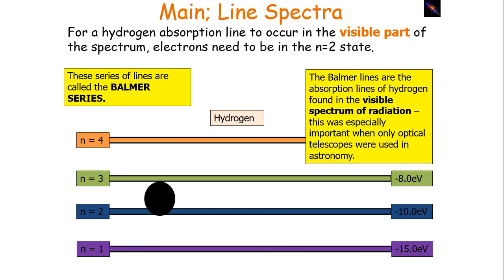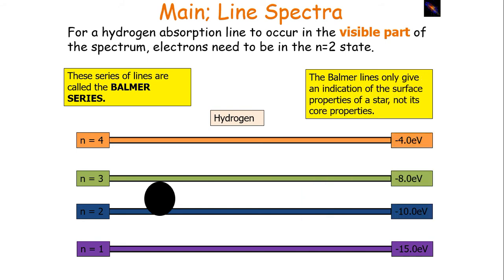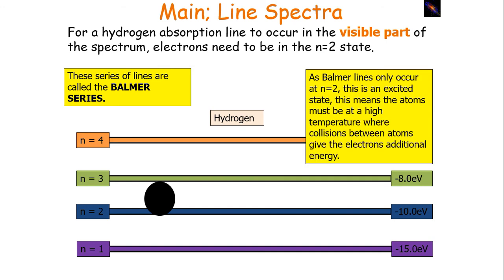The Balmer lines are seen in all stellar spectra, where light emitted by the star has been absorbed by hydrogen atoms in the stellar atmosphere as the radiation passes through it. The Balmer lines are the absorption lines of hydrogen found in the visible spectrum of radiation, which was especially important when only optical telescopes were available. The particles in the cores of stars do not contain electrons, so it's only the atoms in the atmospheres of stars which produce these lines — the Balmer lines only give an indication of the surface properties of a star, not its core properties.